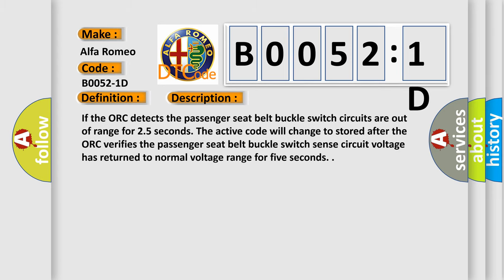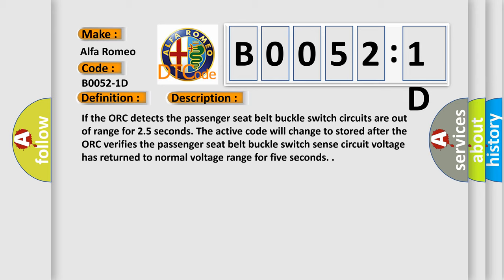And now this is a short description of this DTC code. If the AUK detects the passenger seat belt buckle switch circuits are out of range for 2.5 seconds, the active code will change to stored after the AUK verifies the passenger seat belt buckle switch sense circuit voltage has returned to normal voltage range for 5 seconds.